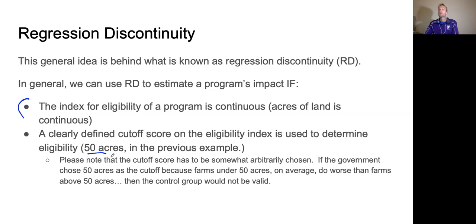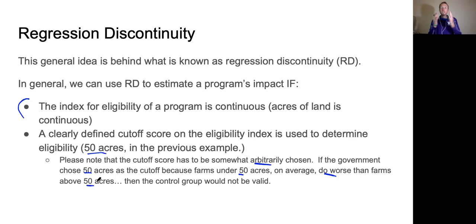This is important: the cutoff score has to be arbitrarily chosen. If the government chose 50 acres as the cutoff because farms under 50 acres are much worse off than farms above 50 acres, then the control group would not be valid. We're depending on the fact that farms just a little bit below the cutoff are pretty much the same as farms just above it. If the government chose this region because they're very different at that point, this is not a valid comparison group and we do not have internal validity.